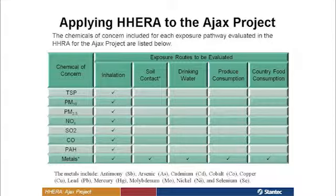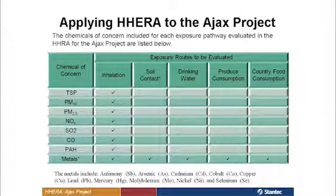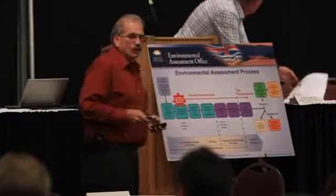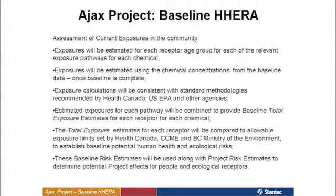The things we're going to be looking at are total suspended particulate, PM10 and 2.5, NOx, SOx, SO2, CO, PAHs, and metals. For the baseline, the exposures are going to be estimated for each of the receptor age groups for each of these pathways, based on the baseline concentrations measured in soil, country foods, water, and so on. The exposure calculations will be consistent with what Health Canada expects, the US EPA would expect, and the BC Ministry of the Environment would expect. Once we've got that, we'll look at taking everybody's exposure from drinking water, soil, and country foods, summing that up to give us a total exposure for each receptor for each chemical.